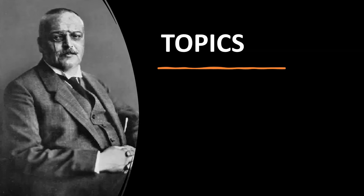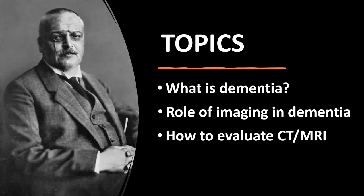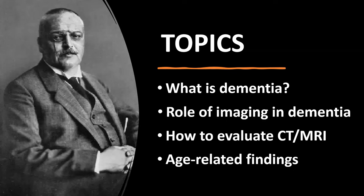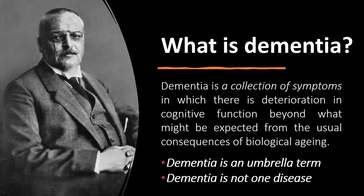The topics of this presentation include: a brief introduction on what dementia is exactly; the role of imaging in dementia; how to evaluate a CT or MRI in an elderly patient suspected of having dementia; and discussion of the broad spectrum of age-related imaging findings — what can be considered normal or abnormal.